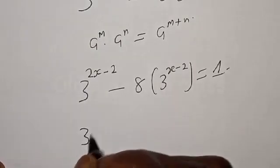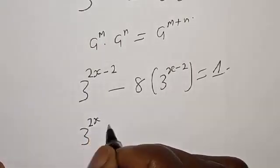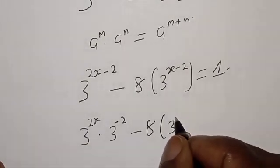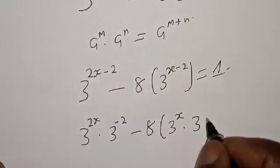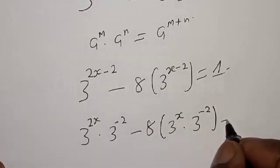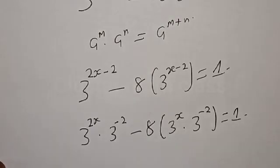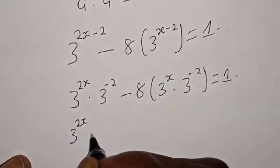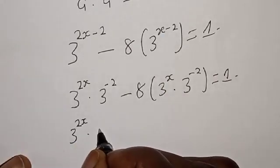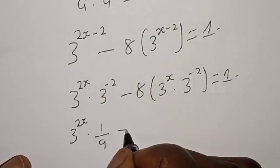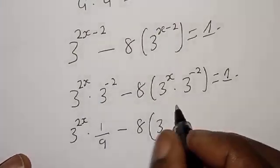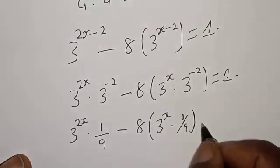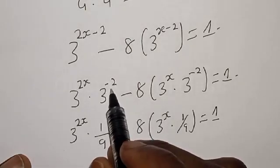We have 3 raised to power x squared minus 8 into 3 raised to power x multiplied by 3 raised to power (x minus 2) equal to 1. Then we have 3 raised to power x squared minus 8 into 3 raised to power x multiplied by 1 over 9, equal to 1, because 3 squared is 9.